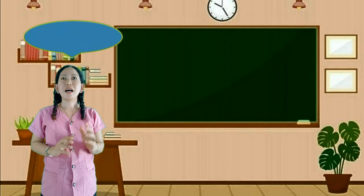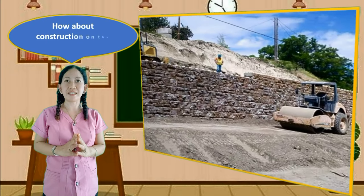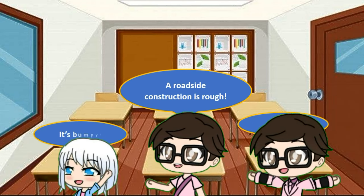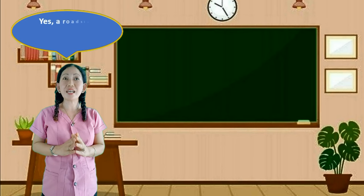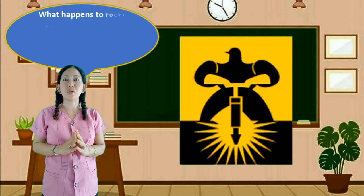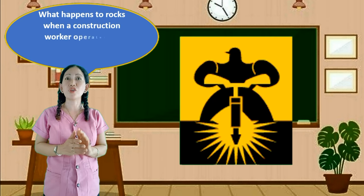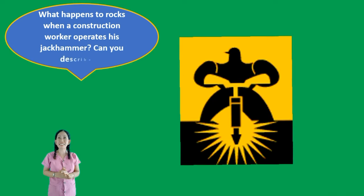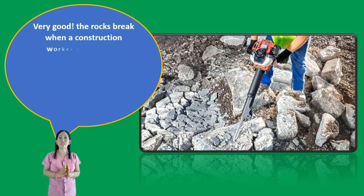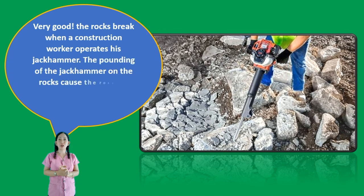How about construction on the roadside? A roadside construction is rough, uneven, and bumpy. What happens to rocks when a construction worker operates his jackhammer? The rocks break into fragments. The pounding of the jackhammer on the rocks causes the rocks to have cracks and eventually break into pieces.